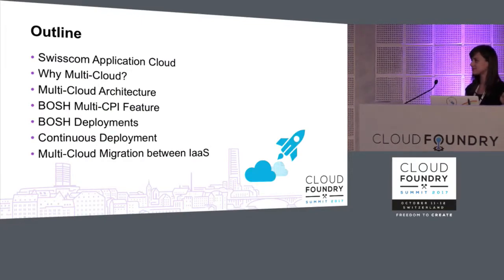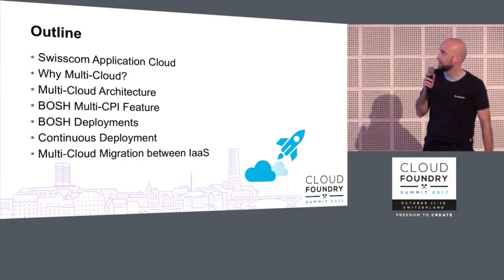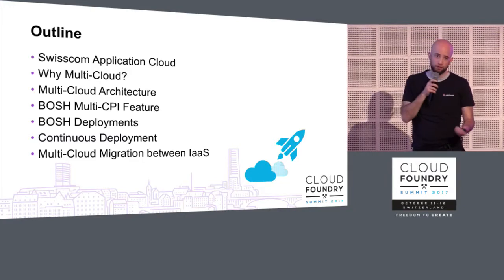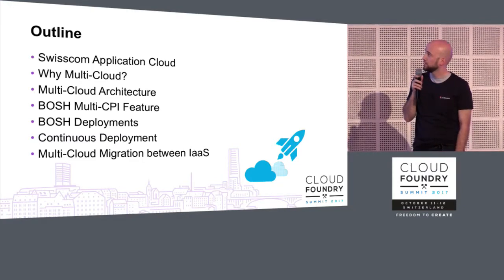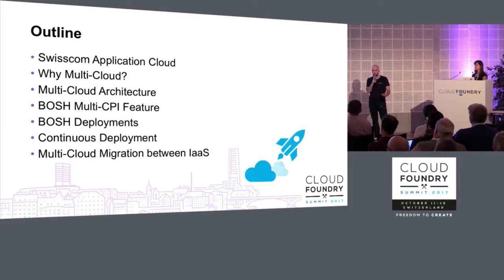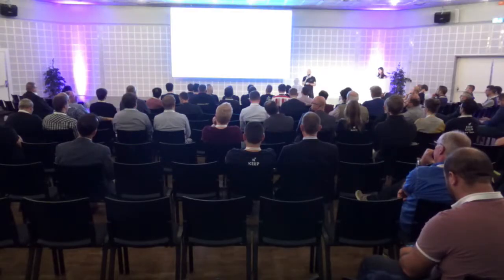Before we start, here is a brief outline of the topics we'll cover. We'll introduce the Swisscom application cloud as a product. We'll discuss why we've chosen a multi-cloud environment and how the multi-cloud architecture looks at Swisscom. We'll give you a short introduction to the BOSH multi-CPI feature, and then an in-depth look at the BOSH deployments that power the Swisscom application cloud. You'll also get a brief detour to our continuous deployment setup with Concourse.